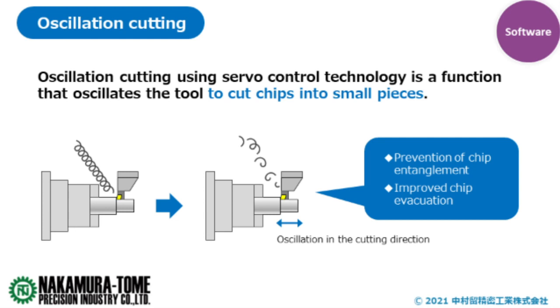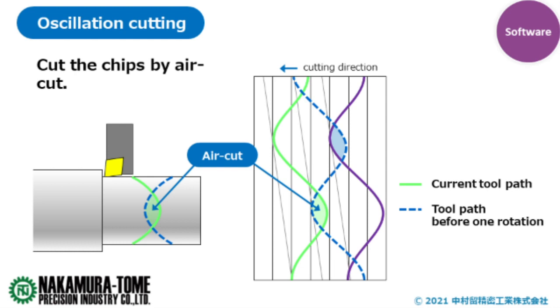First of all, for those of you who have never seen it before, let me explain what oscillation cutting is. Oscillation cutting is a machining method that vibrates the cutting edge to break up chips. The cutting edge swings in a trajectory like this. When the cutting edge passes through the section of the trajectory that has already been processed once, an air cut section is created and chips are cut.